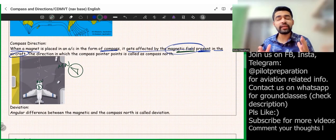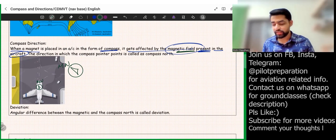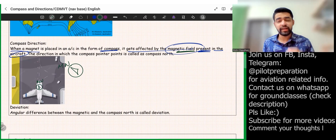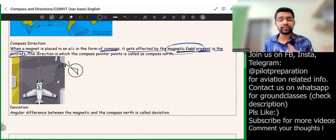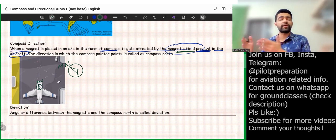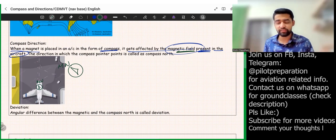Because of these electromagnetic fields, the compass gets deviated from the correct alignment of the earth's magnetic field. Since the equipment inside the plane does not change after manufacturing, we can calculate a particular amount of error that these instruments are causing. Once we remove that error, we get the compass deviation, and from that we can get magnetic direction — and from magnetic direction, true direction.